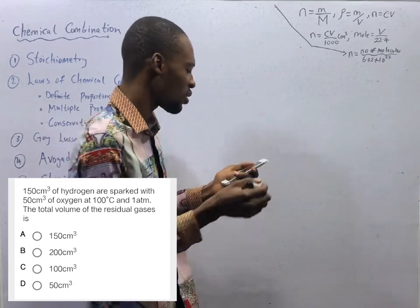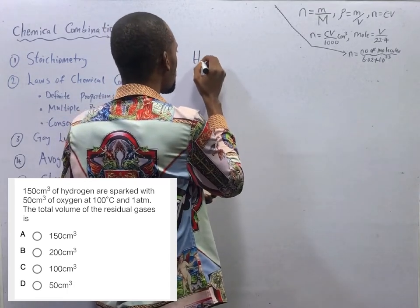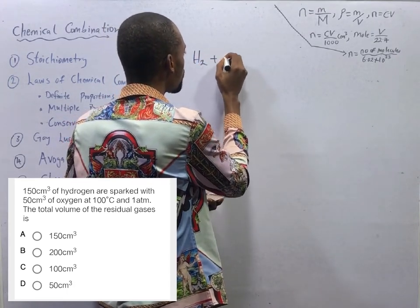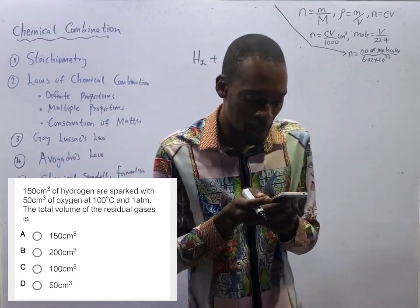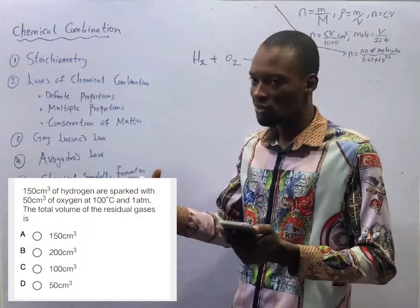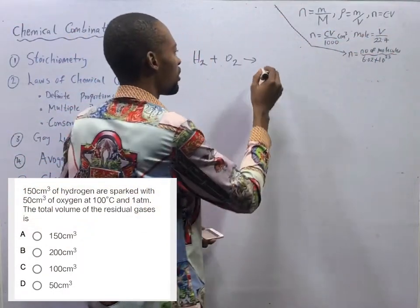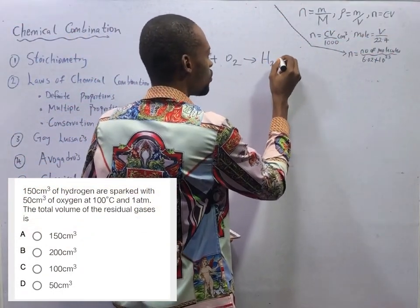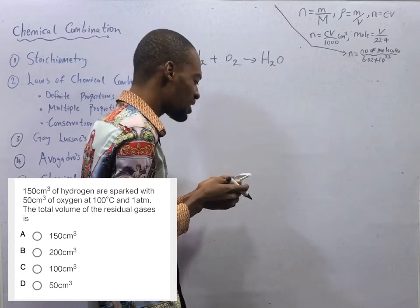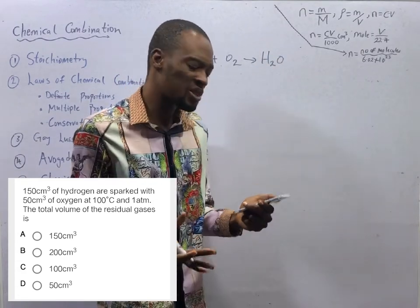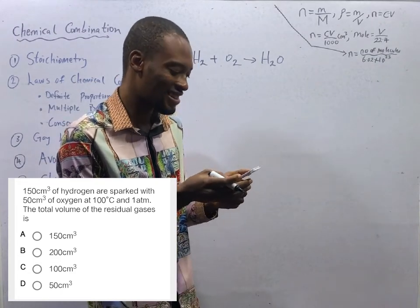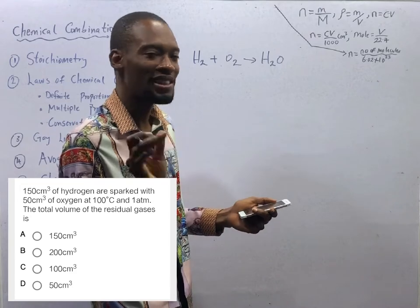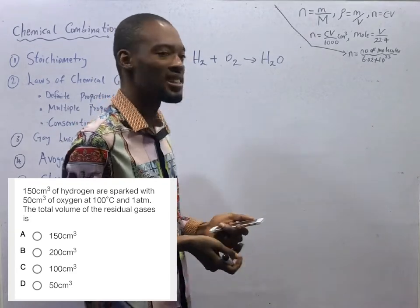Hydrogen and oxygen, H₂ plus O₂. And we know that if hydrogen and oxygen are sparked, we are definitely getting water. So H₂O. And the temperature shows that at 100 degrees Celsius, water should be gas. So we are dealing with gases, water gas, not water liquid or water solid.